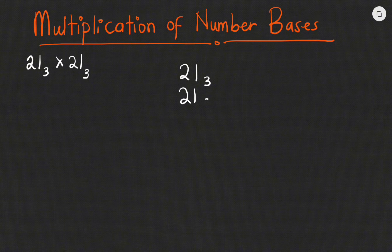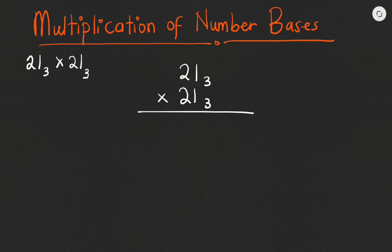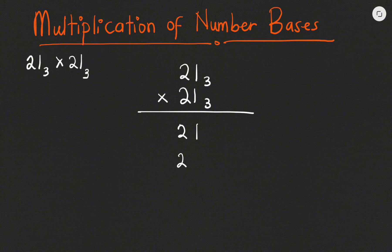We have 21 base 3 multiplied by 21 base 3. Just like the way we do normal multiplication, we do the same thing here. So 1 multiplied by 1 gives us 1, 1 multiplied by 2 gives us 2, then 2 multiplied by 1 gives me 2, then 2 multiplied by 2 gives me 4. Because it is 4 — more than 3 — we have to handle that since we are dealing with base 3.